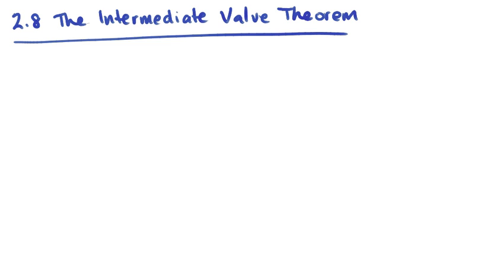The Intermediate Value Theorem. Suppose you're skiing down a mountain. Let's actually do that.